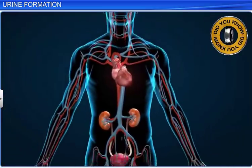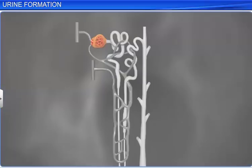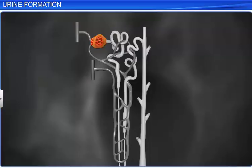Did you know that on average the human kidney filters about 1100 to 1200 milliliters of blood per minute, which is about one fifth of the blood pumped out by each ventricle of the heart in a minute? The amount of filtrate formed in the Bowman's capsule due to glomerular filtration every minute is called the glomerular filtration rate or GFR, which in a healthy individual is about 125 milliliters per minute, or 180 liters per day.